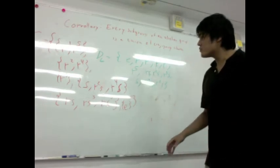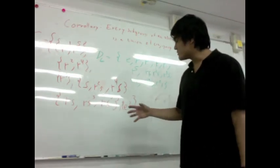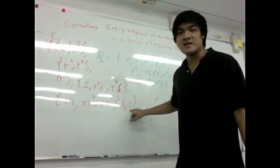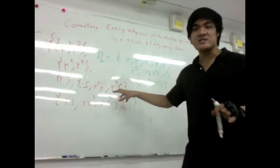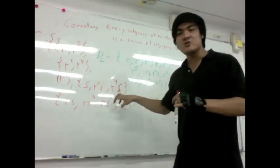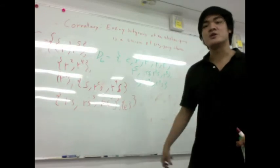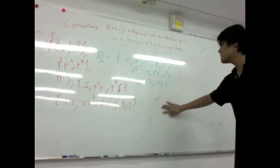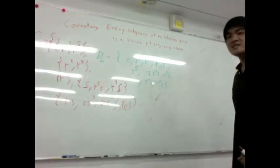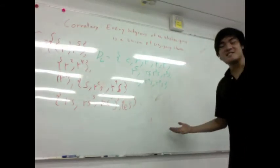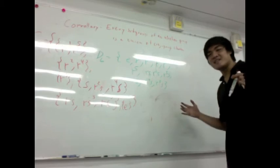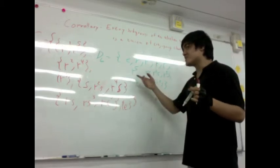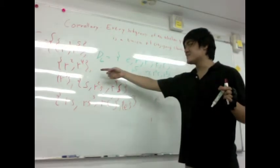If you want a subgroup or an actual group, it has to always have a unit and it has to maintain closure. And of course the entire space, the entire center, is a union of conjugacy classes.